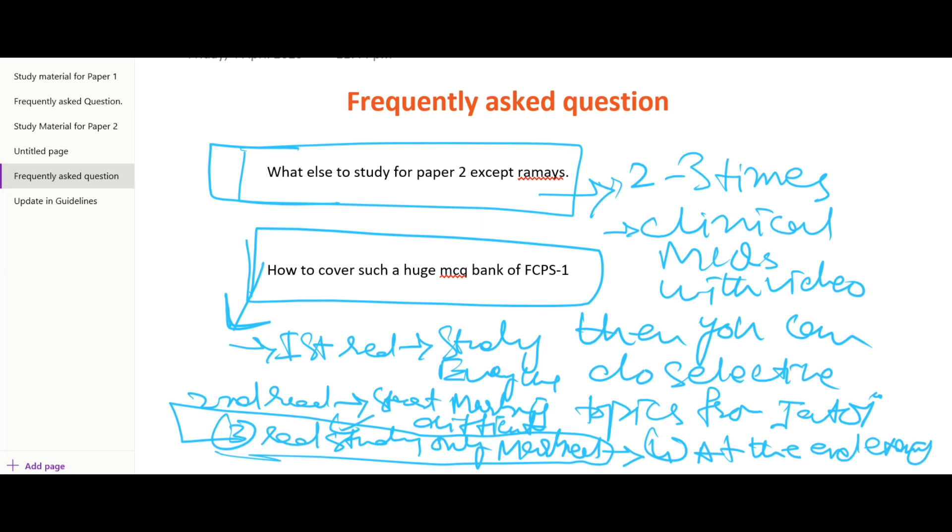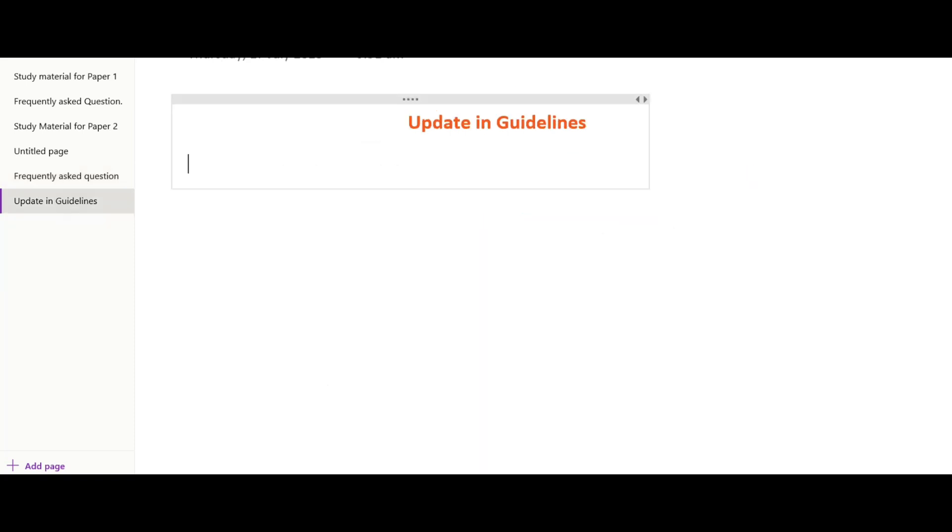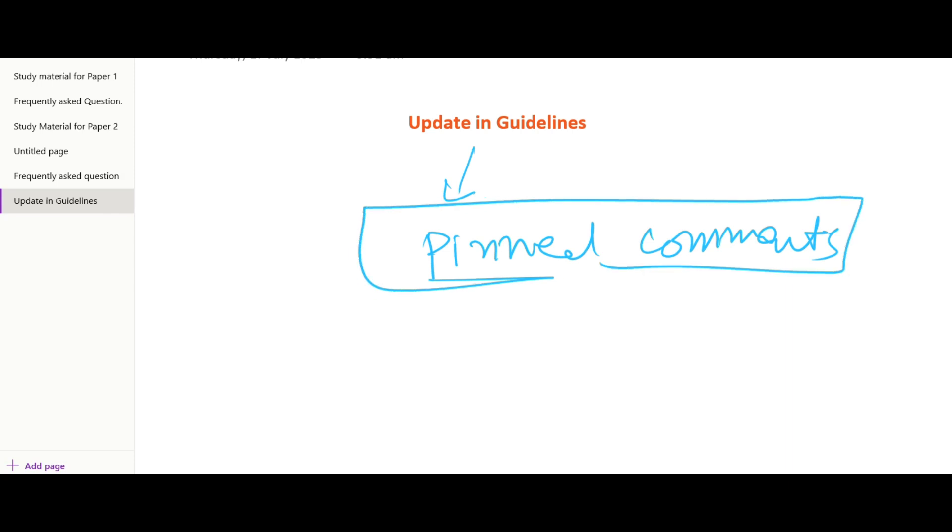That was all about the guidelines and study material related to FCPS Part 1 Ophthalmology. If there is any update in the guidelines, it will be updated in the first pinned comment of this video. Rest of the guidelines will stay the same, but if there is any update, we will update in the first pinned comment, so always see the first pinned comment.